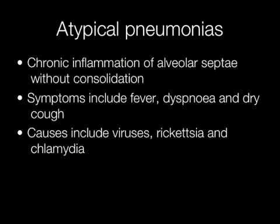In atypical pneumonias, the inflammation is situated in the alveolar septae and the pneumonia occurs without consolidation — hence the term atypical. Symptoms include fever, dyspnea and dry cough. The causes include viruses, rickettsia and chlamydia.